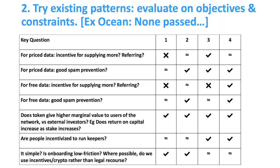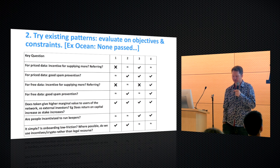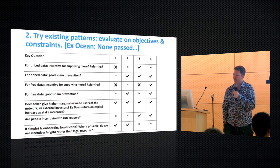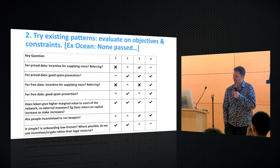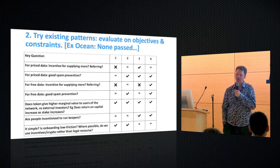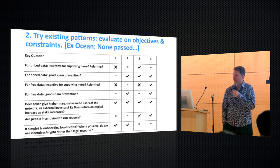What we did was: we have these seven questions and this overall objective function. Design number one was actually just a TCR on the actors — a whitelist of the good actors. How well does that solve the problem? For the first checkbox, it failed — a TCR of good actors doesn't help you at all for incentivizing the supply of data. What about spam prevention? Well, it kind of works because if someone starts supplying a lot of spam, they can get kicked out. Design number two — what's the simplest thing that could possibly work? — was a TCR of the data. Does it help for supplying more data? Maybe. Spam prevention is very nice — you can have a whitelist of good data. But you can see it's passing on a few things and only going so-so on others.